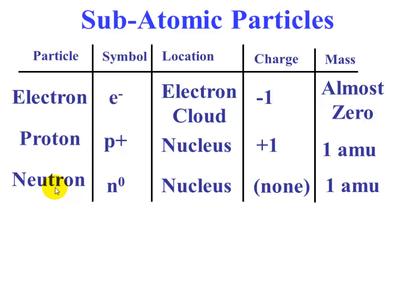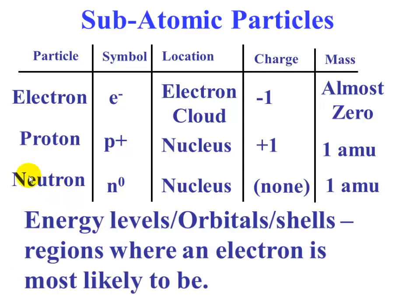The electron cloud can also be known as energy levels, orbitals, or shells. These are regions where electrons are most likely to be. The electrons are moving very fast around the nucleus, so there's no telling exactly where they'll be, but the electron cloud—or energy levels, orbitals, or shells—is where we're most likely to find them.